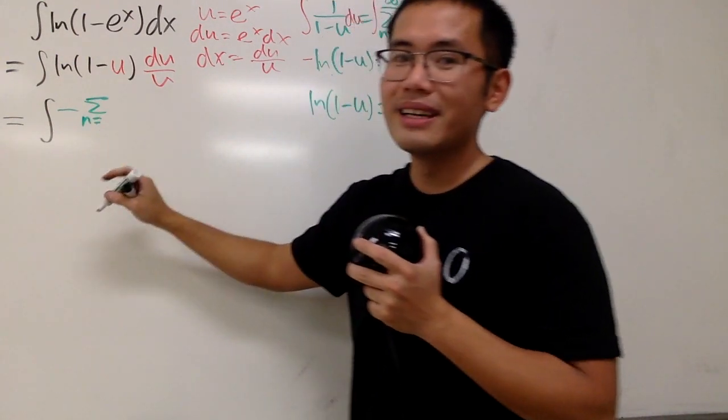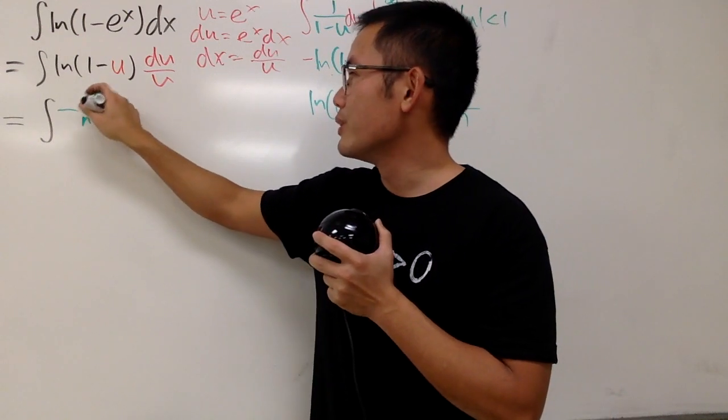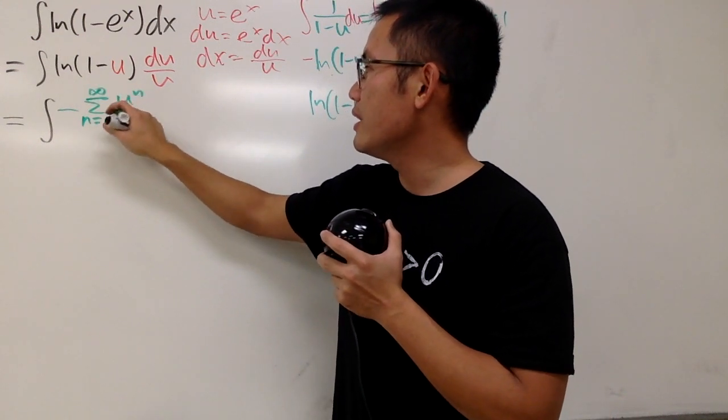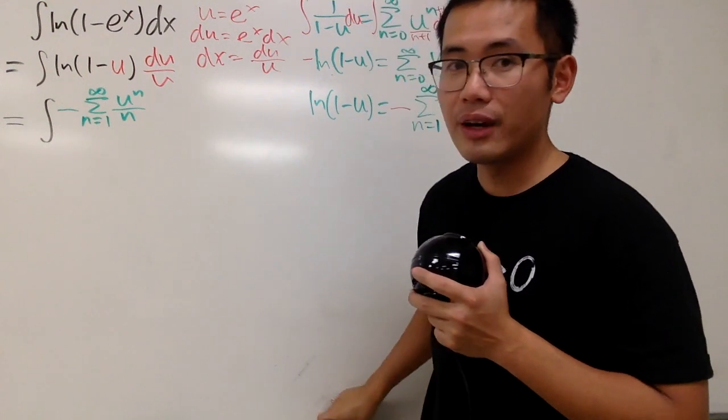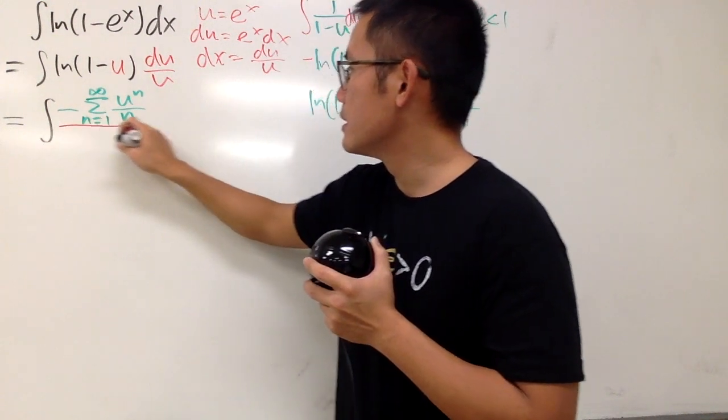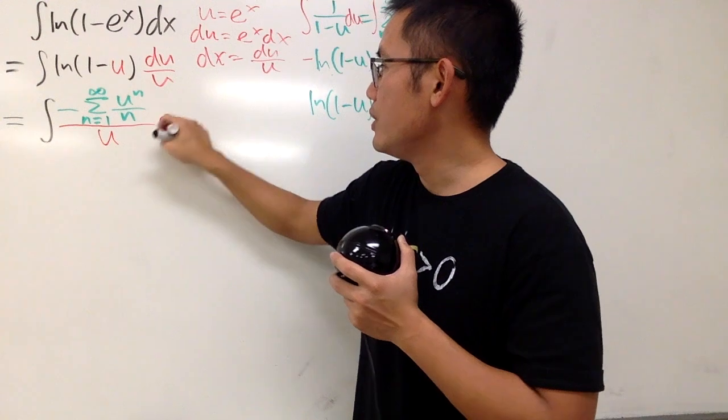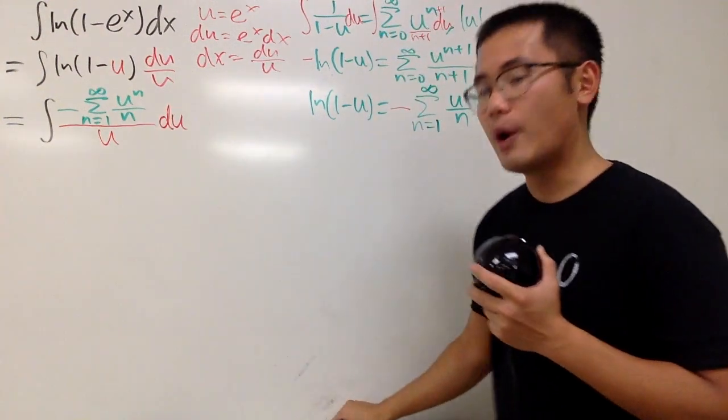So, negative series, well, the sum doesn't matter how you say it. And we have n goes from 1 to infinity, u to the n over n. And don't forget, we still have the u on the bottom. And we have the du right here.